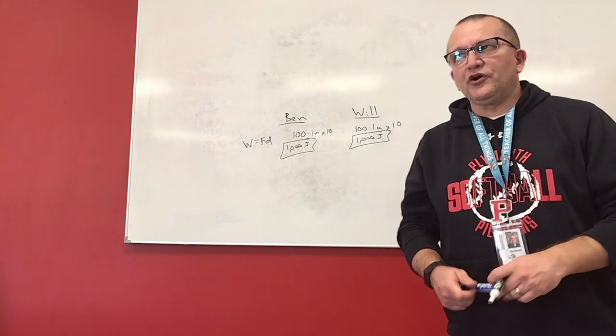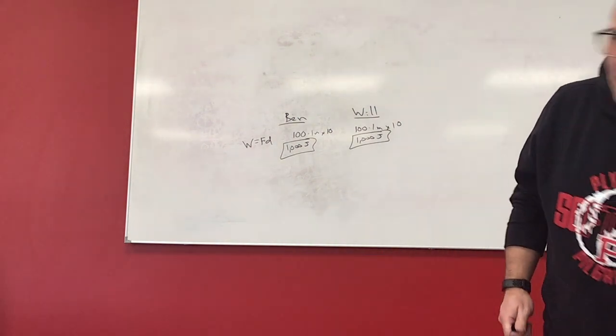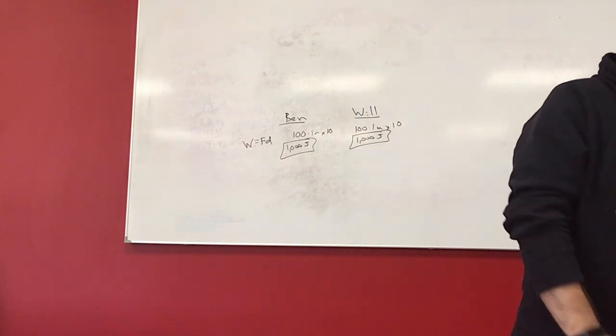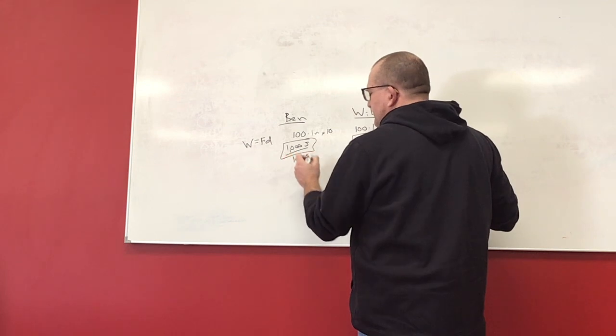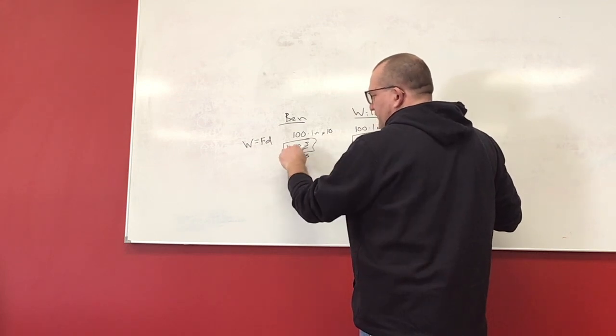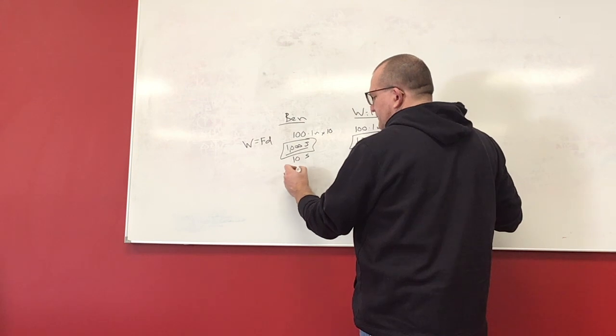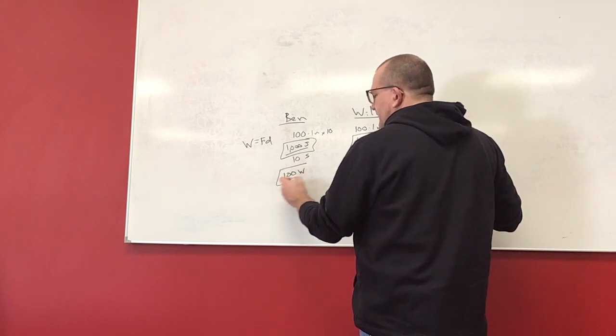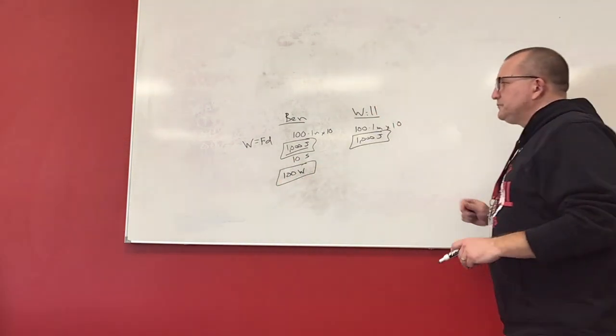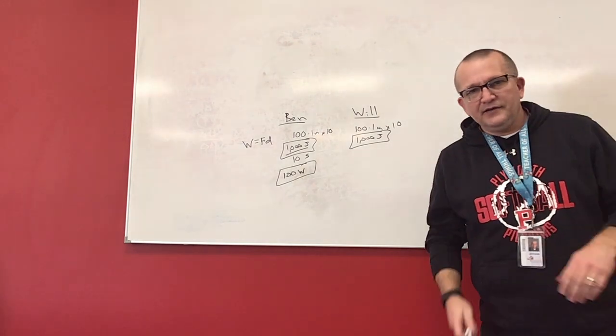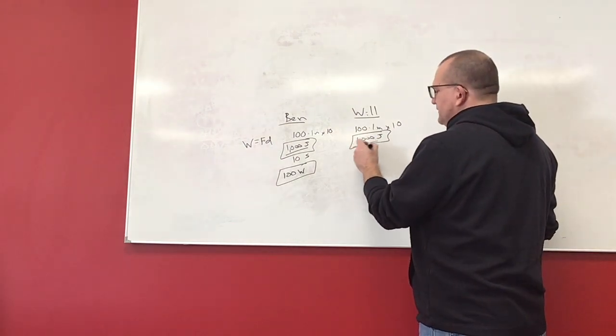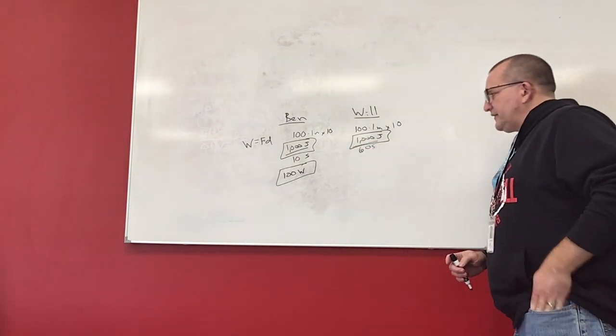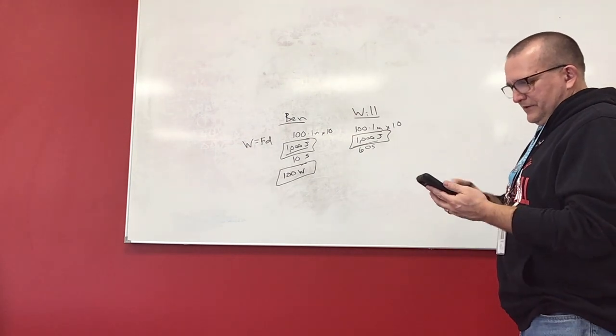So they're both doing the same amount of work, but now power is a different thing. Power is work divided by time. So Ben, we'll look at Ben. It says Ben's lifting the hundred pound barbell 10 times in 10 seconds. So doing that much work, we'll divide it by 10. Alright, joules per second. So a thousand divided by 10, he is doing 100 watts of power.